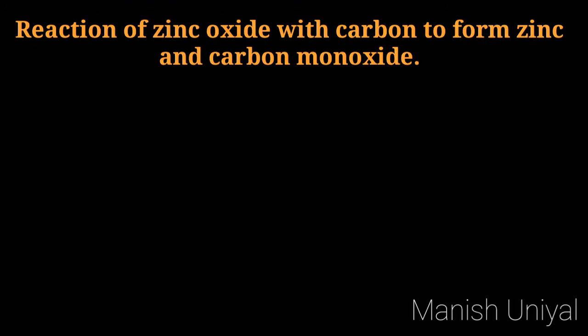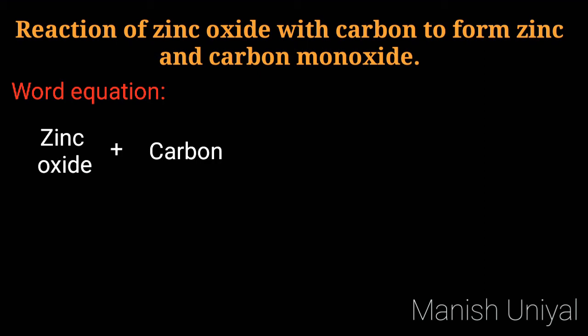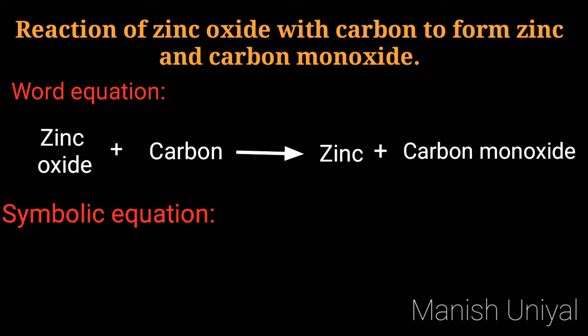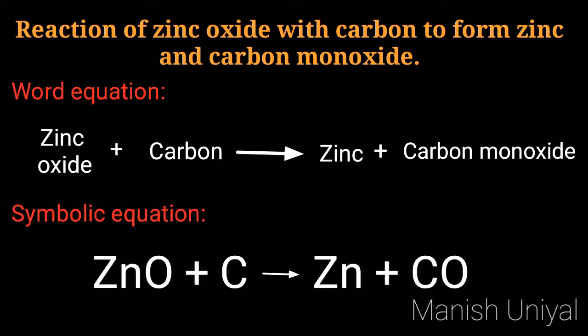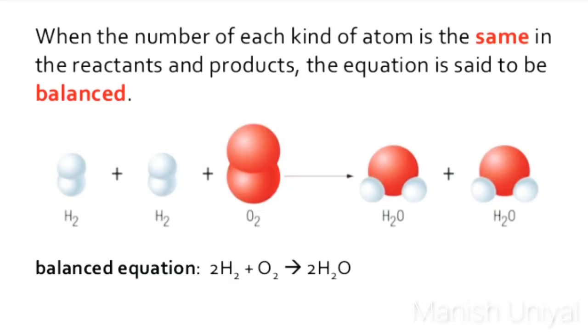For example, the reaction of zinc oxide with carbon to form zinc and carbon monoxide. The word equation is: zinc oxide reacts with carbon to form zinc and carbon monoxide gas. In this reaction, you can see the atoms on the reactant side as well as the product side are equal. Such an equation is known as a balanced equation. When the number of each kind of atom is the same in the reactants and products, the equation is said to be balanced.